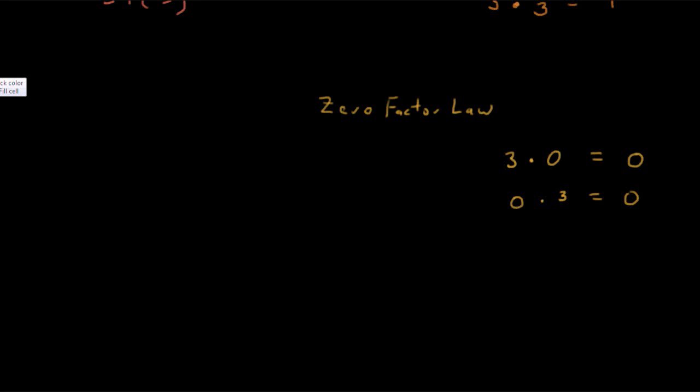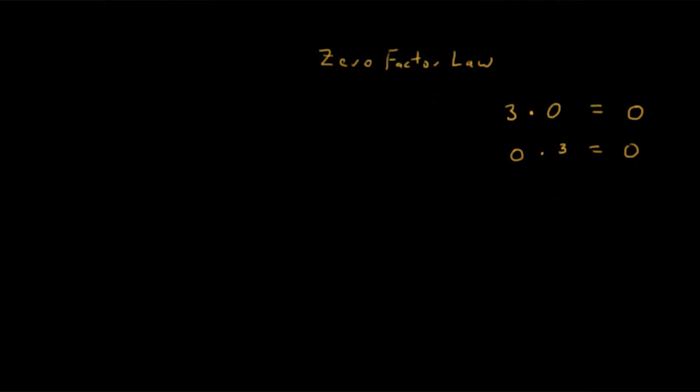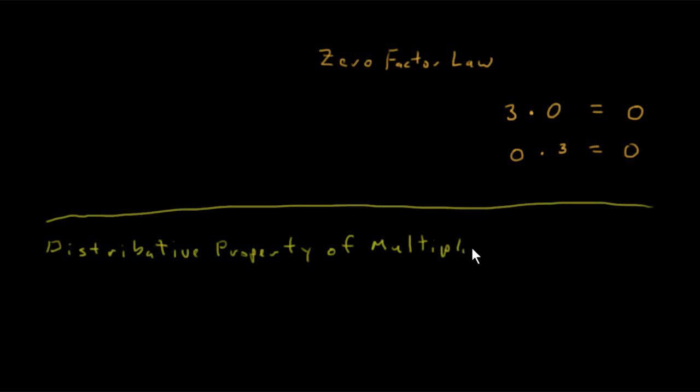The last property we will look at involves both addition and multiplication. And this property is called the, it has a long name. It's the distributive property, distributive property of multiplication over addition. So it's the distributive property of multiplication over addition. And what does an example of this look like? Let's write a, we would like to take the product of a number and a sum. So 2 times 3 plus 4 is a good example. And we'll distribute, the 2 distributes to the 3 and it also distributes to the 4.